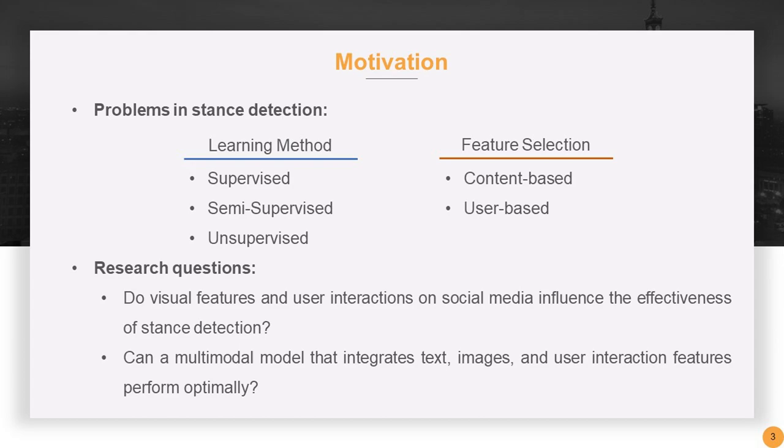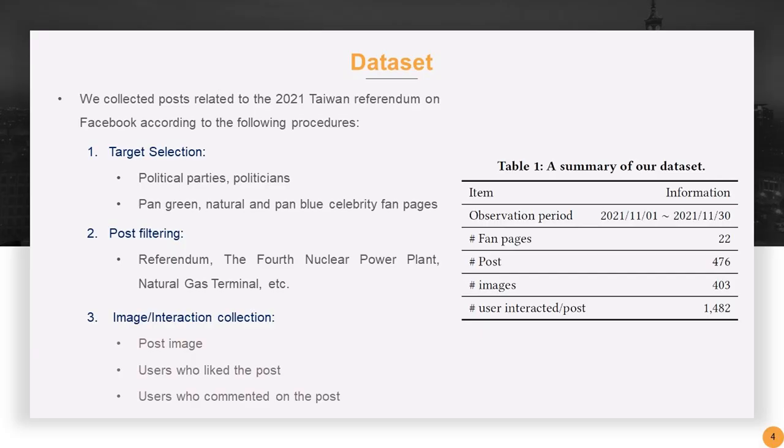The second question is whether combining text with these two types of features can achieve the best performance. We collected posts related to the 2021 Taiwan referendum from Facebook. First, we selected pages of political parties, politicians, and celebrities with different stances.